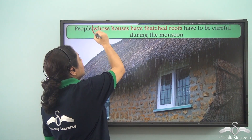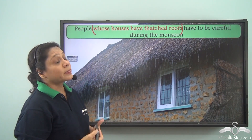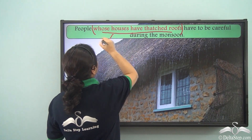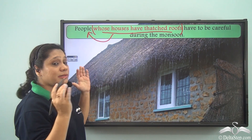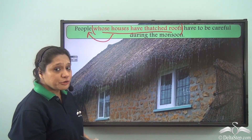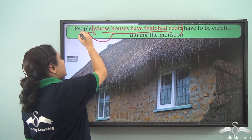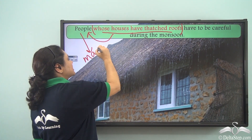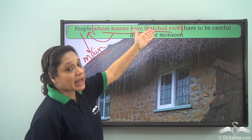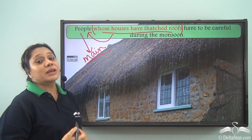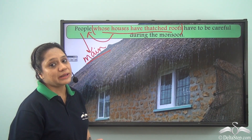'People whose houses have thatched roofs have to be careful during the monsoon.' In this sentence, 'whose houses have thatched roofs' is a group of words describing the noun 'people,' so it is acting like an adjective — it is an adjective clause. 'People have to be careful during the monsoon' is the main clause, while 'whose houses have thatched roofs' is the dependent adjective clause that depends on the main clause to complete its sense.